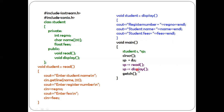After read completes, execution returns to void main and the next statement sp arrow display calls the display member function. The cursor moves to the display function definition, where void is the return type specifier, student is the name of class, the two colons are the scope resolution operator, and display is the member function.